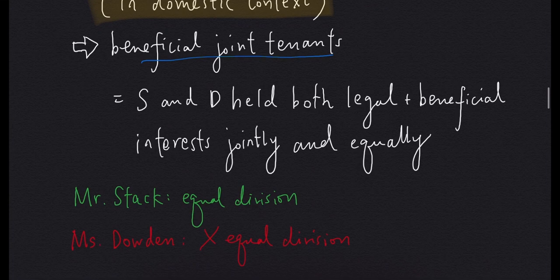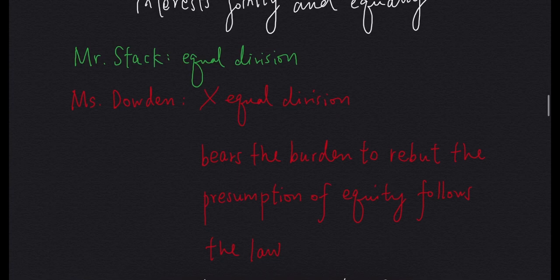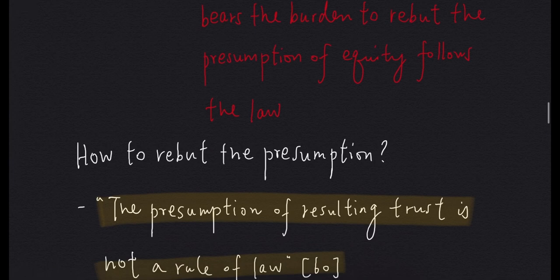So Mr. Stagg is arguing that there should be equal division, but Ms. Dalton said that there shouldn't be. So Ms. Dalton bears the burden to rebut the presumption of equity follows the law. But how can Ms. Dalton do so?